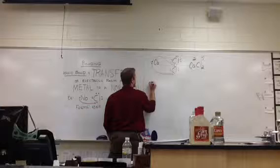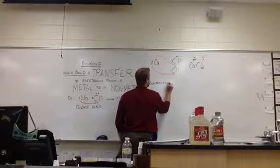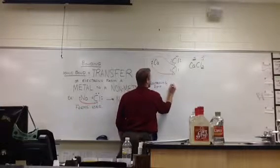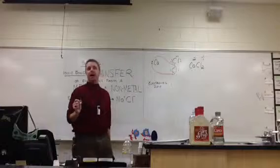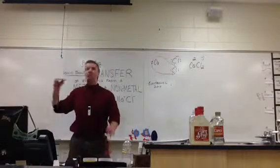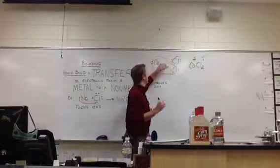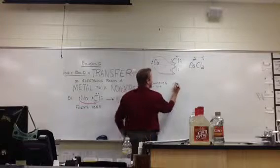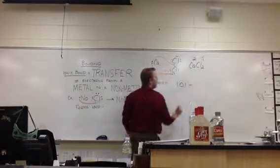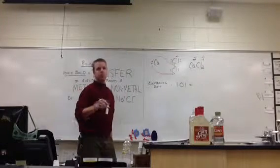One last thing with regards to ionic bonding: there's something called electronegativity — the ability to attract electrons. The electronegativity difference for an ionic compound or ionic bond — the difference between the two elements, like calcium and chlorine — that difference will be greater than 1.01.